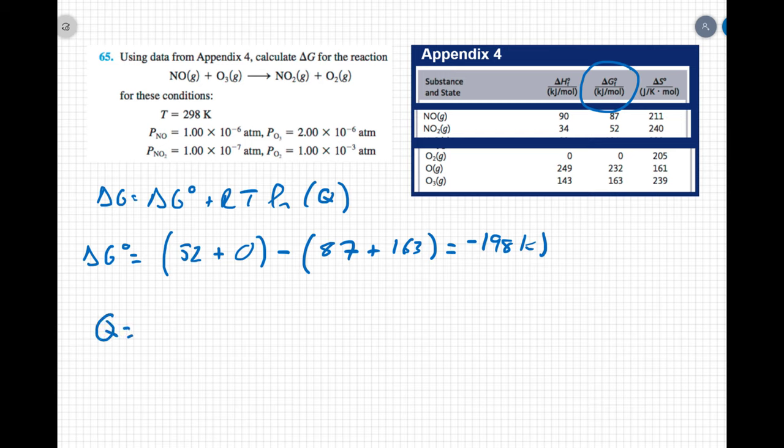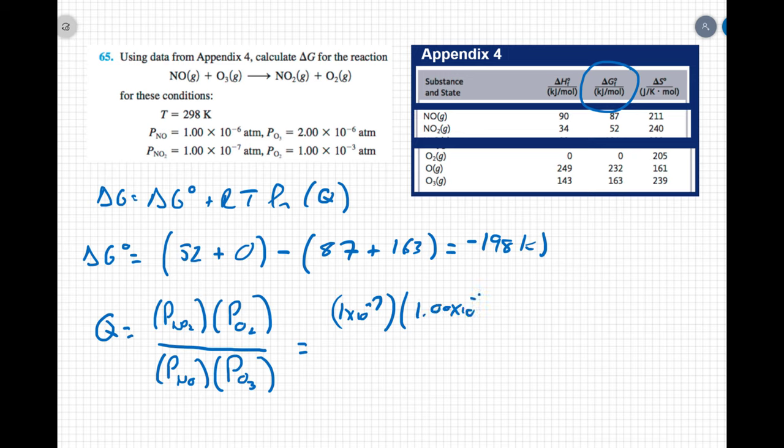Q is going to be my reaction quotient. So this is going to come from the equilibrium expression. It's going to be the partial pressure of NO2 times the partial pressure of O2 divided by the partial pressure of NO times the partial pressure of ozone, O3. So that's going to equal 1×10^-7, 1×10^-3, all over 1×10^-6, times 2×10^-6. That equals 50.